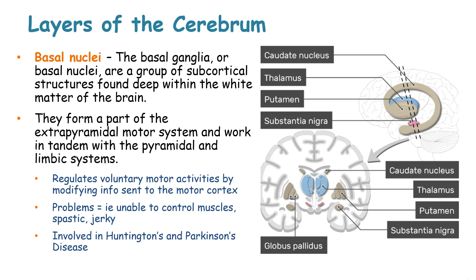One of the important parts of the brain is the basal nuclei, or the basal ganglia. The basal ganglia is a group of subcortical structures found deep within the white matter of the brain, and they form part of the extrapyramidal motor system, working in tandem with the pyramidal and limbic systems.